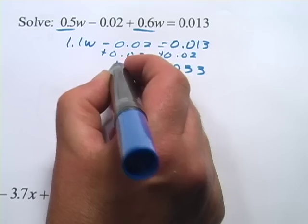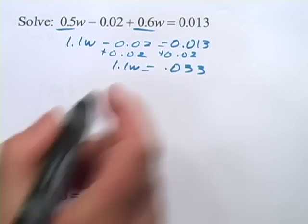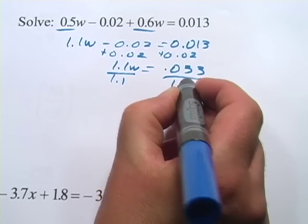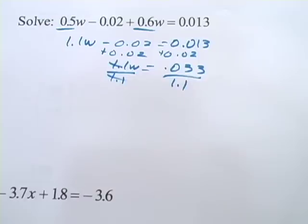And over here, we've still got 1.1W. And finally, we will divide by 1.1 both sides. Of course, here it cancels and you get the W alone, which is what you want.